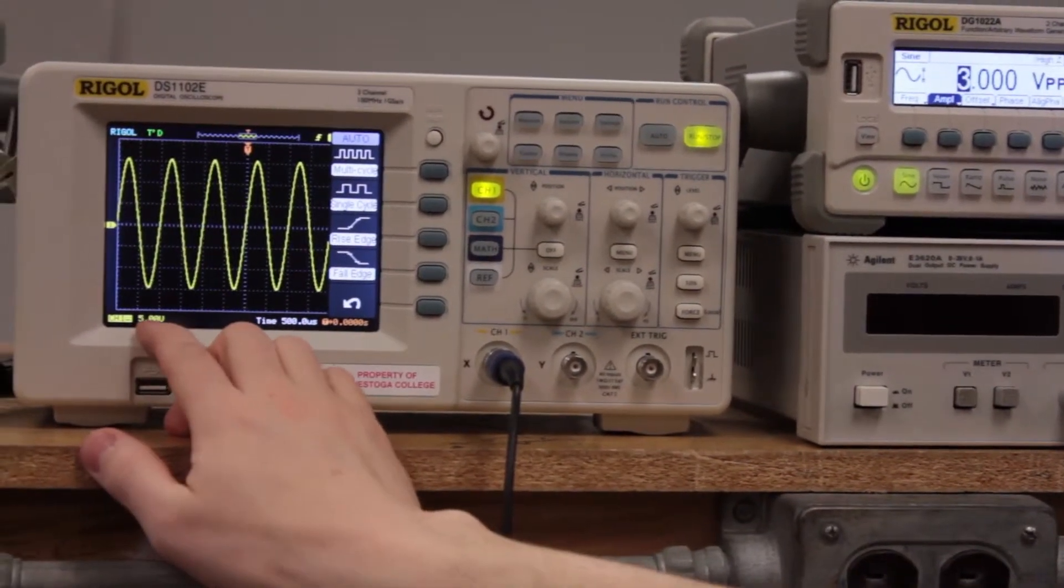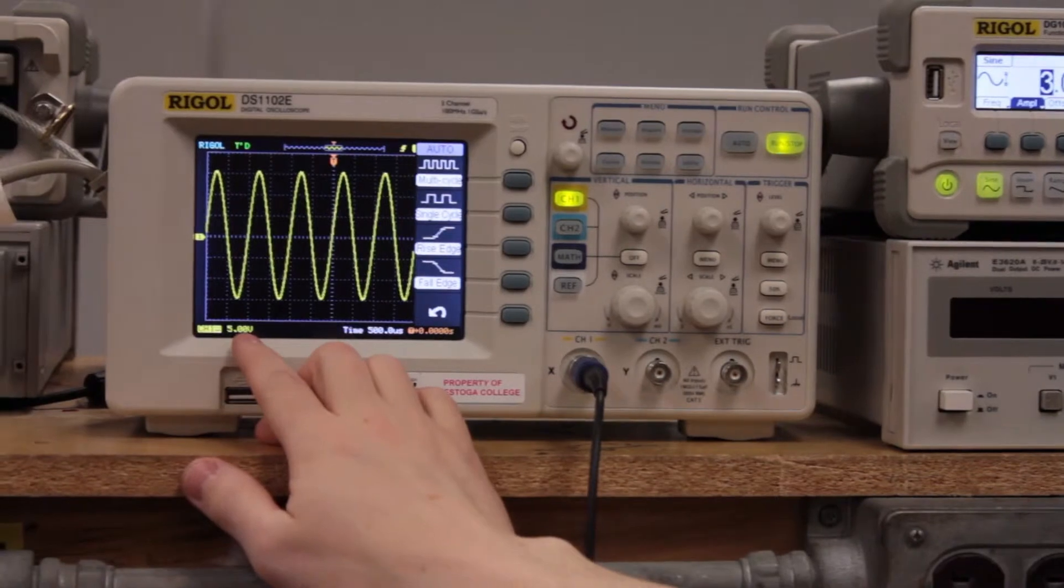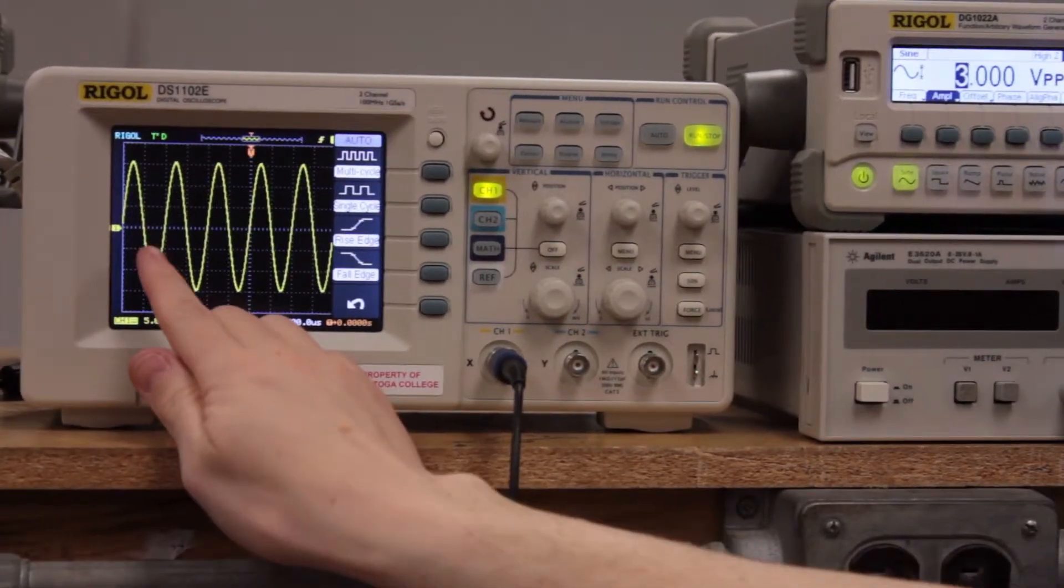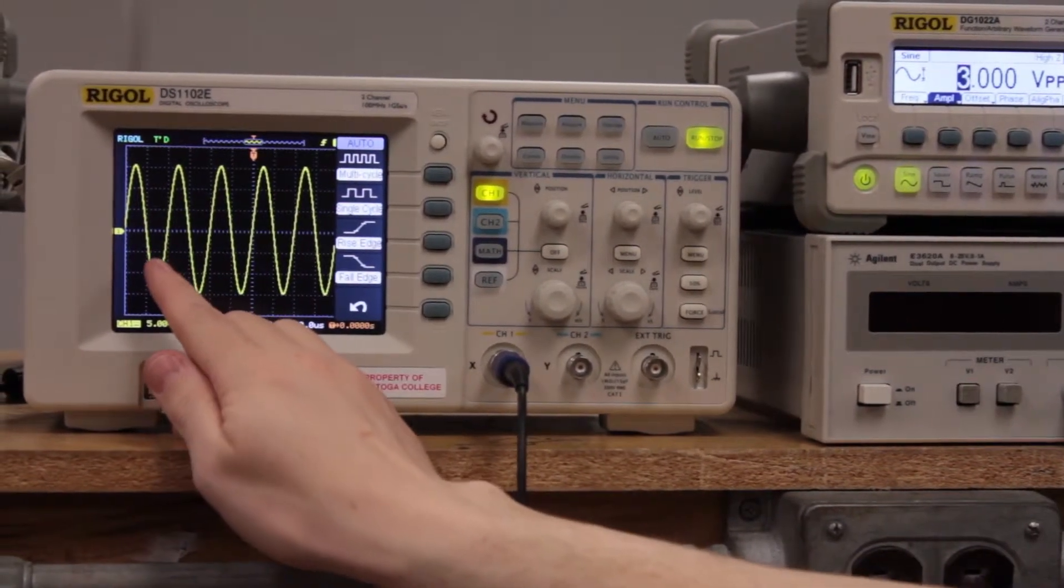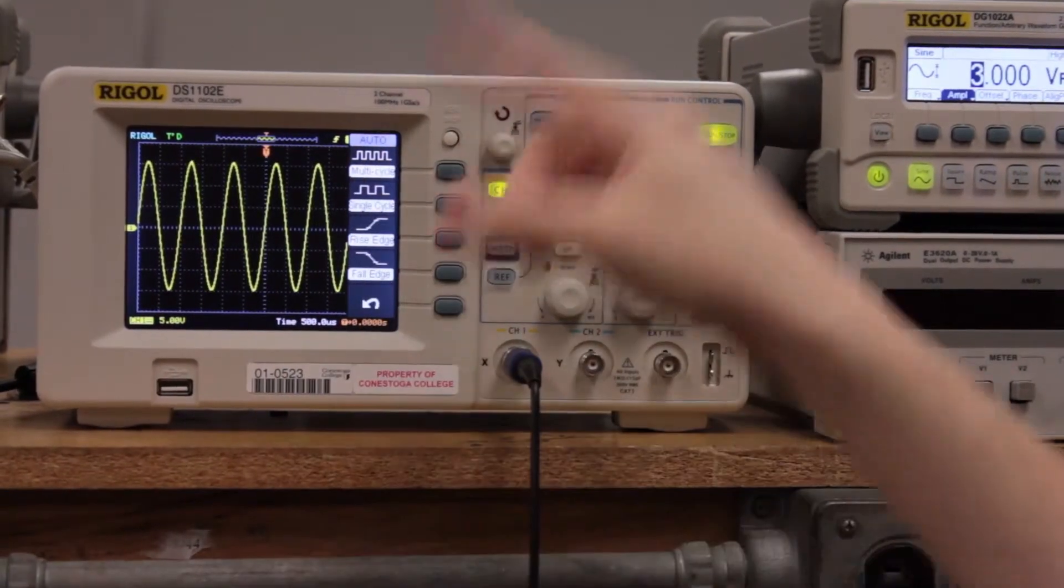You can see that's what this down here means. For each one of these squares created by the dotted lines, that's equal to five volts in the vertical up-down direction.